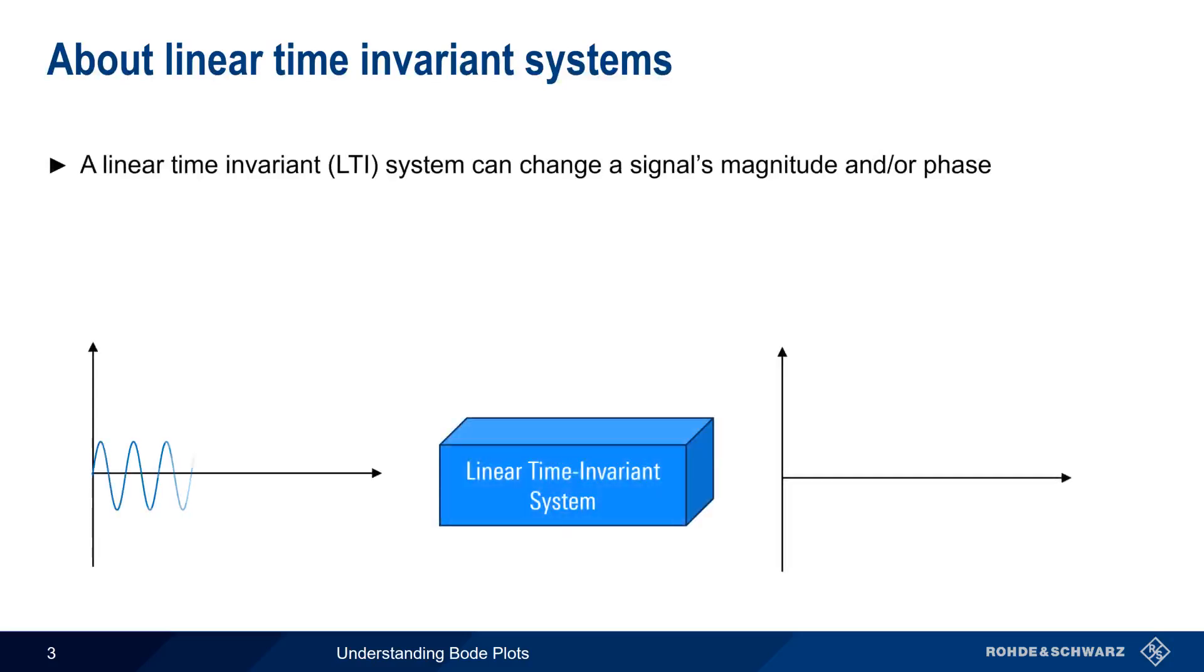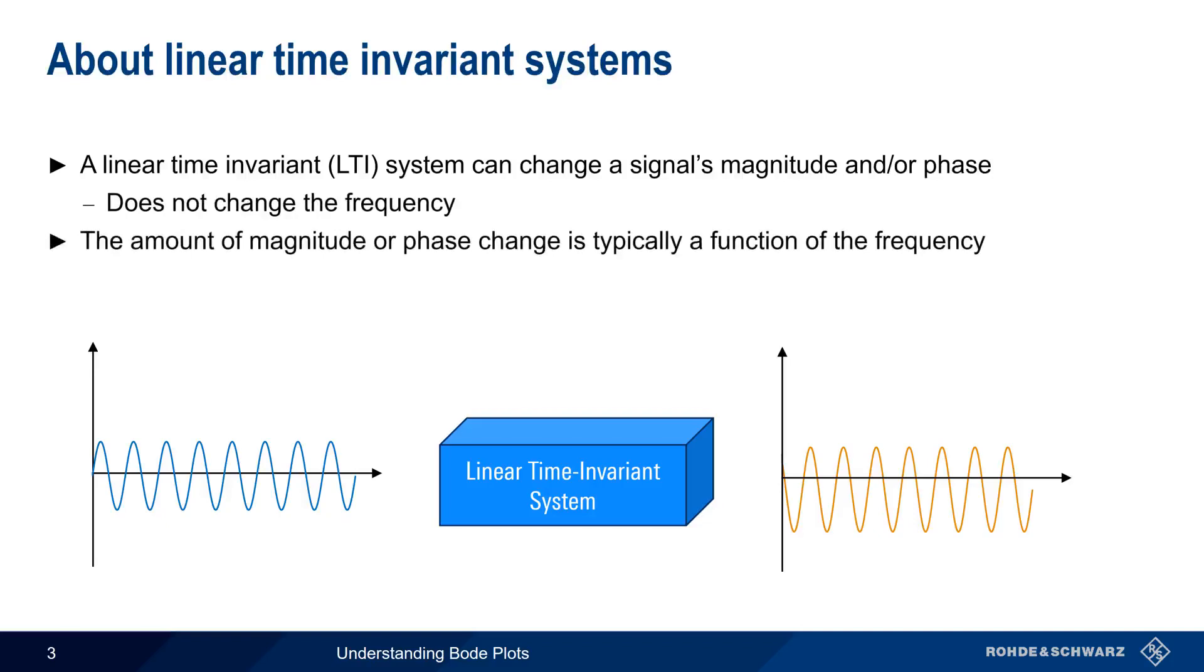A linear time-invariant, or LTI, system is defined as one that can change the magnitude and or the phase of a signal passing through it, but does not change the signal's frequency. The amount of magnitude or phase change introduced by a linear time-invariant system is usually a function of frequency. In other words, the change in magnitude and or phase differs depending on the frequency of the input signal.